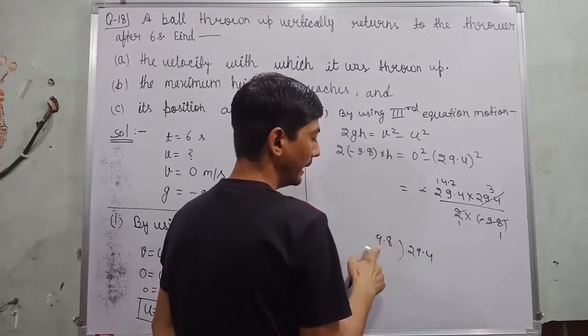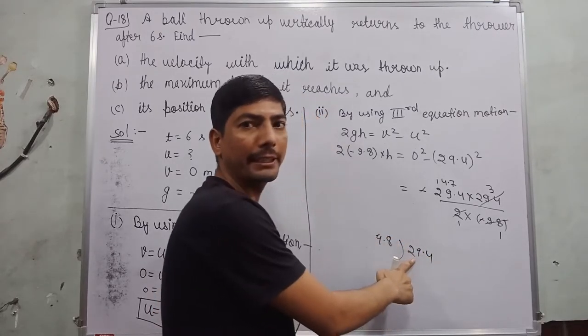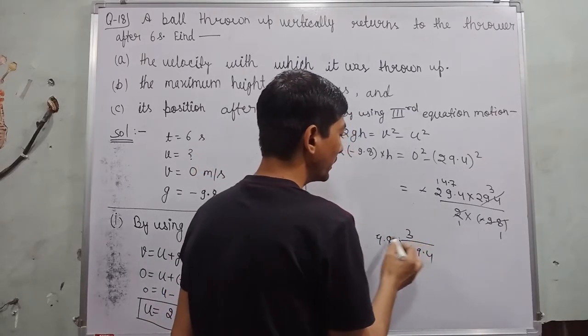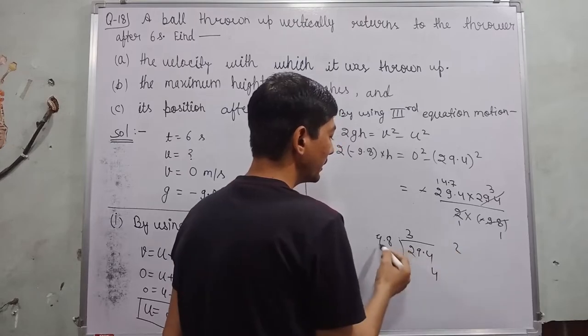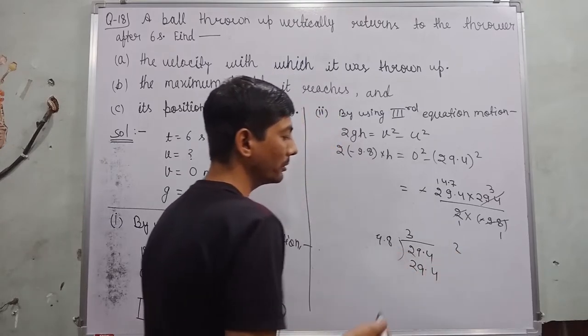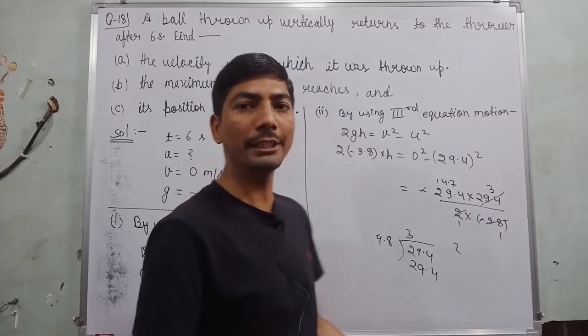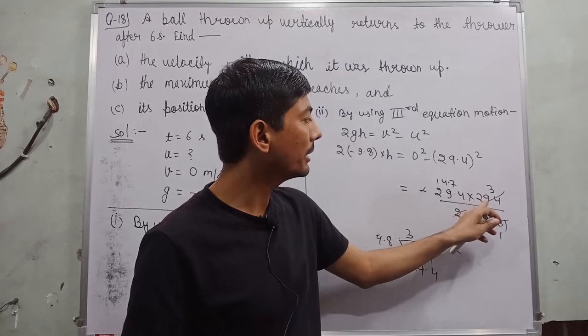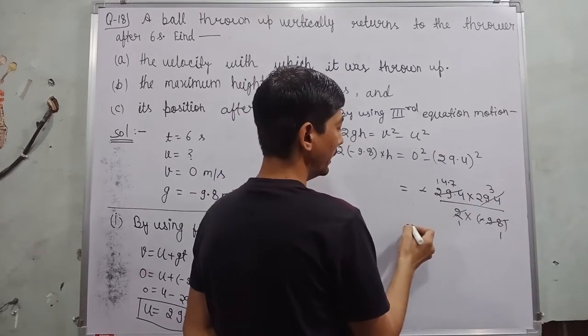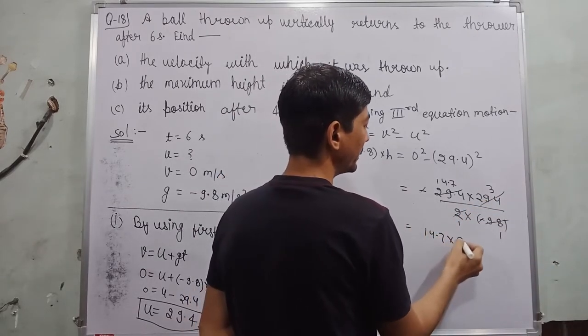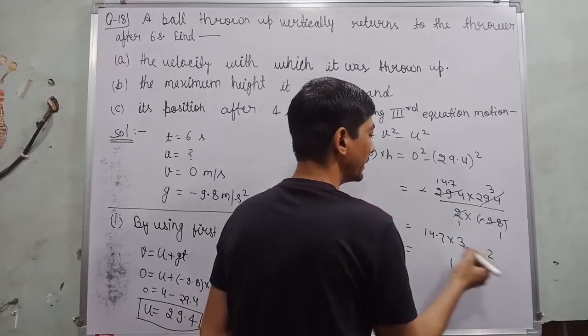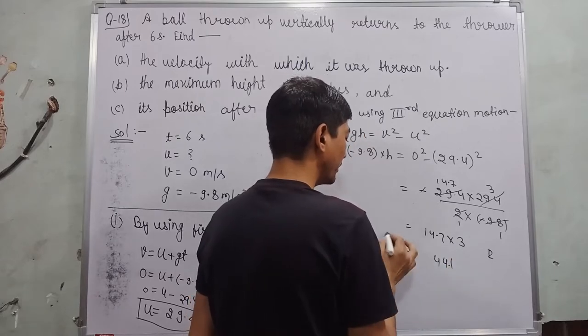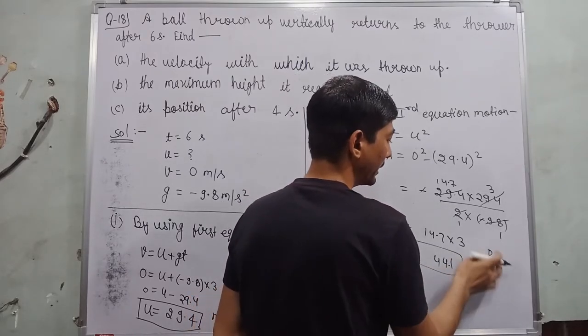divided by 9.8 - 9.8 goes 3 times. So first I multiply to check it: 38 24 to carry 39 27 to 29. Almost you see it goes three times. So till now remaining is what: 14.7 into 3, 37 to 21 to carry 34 to 12 to 14, 1 carry 31 to 314. Height is equal to 44.1 meter. Till here